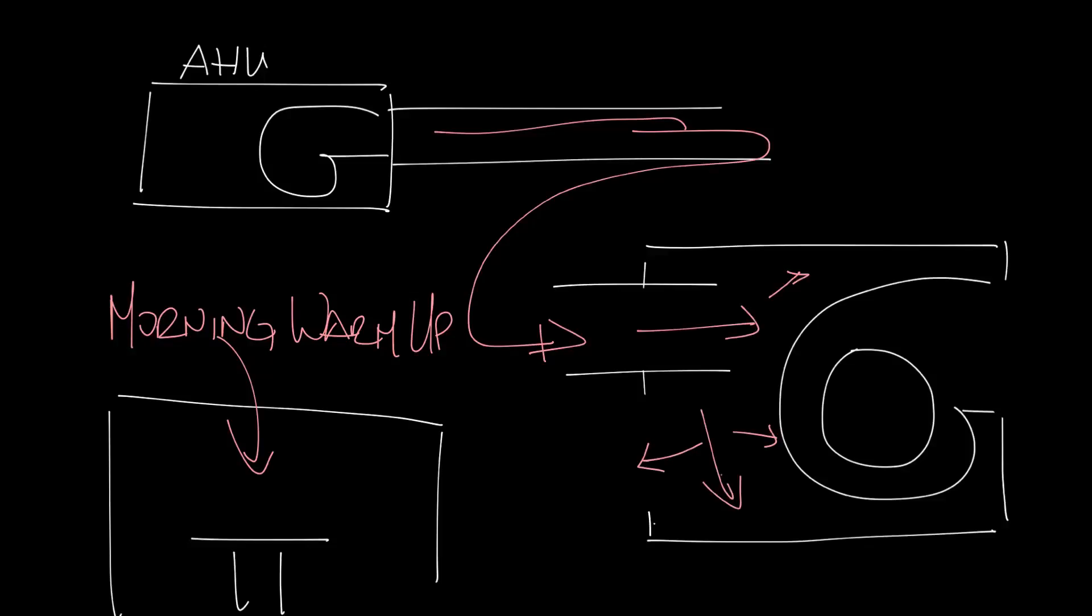First, the air will want to follow the path of least resistance. Since the blower in the fan box creates a lot of resistance in this scenario because it's off, the air will want to go out the induced air inlet.